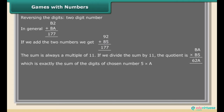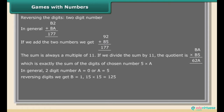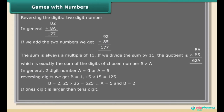If we divide the sum by 11, the quotient is exactly the sum of the digits of the chosen number. If the ones digit is larger than the tens digit, the difference of the two numbers is divisible by 9, so the remainder is 0.